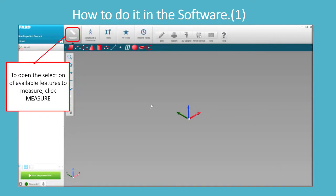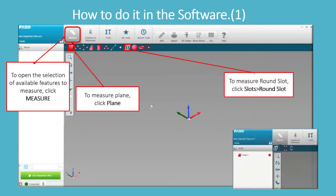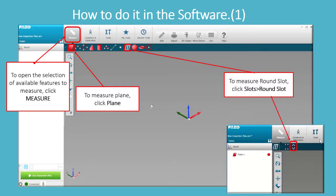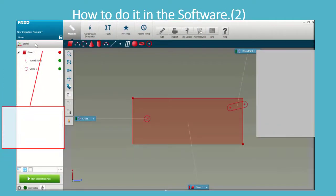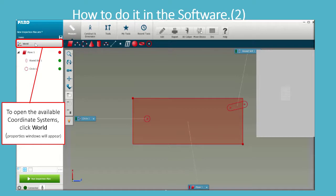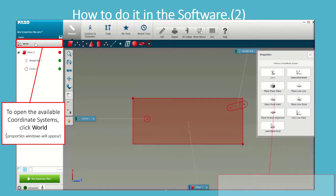To open the selection of available features to measure, click Measure. To measure a plane, click Plane. To measure a round slot, click Slots Round Slot. To measure a circle, click Circle. To open the available coordinate systems, click World. The properties window will appear.